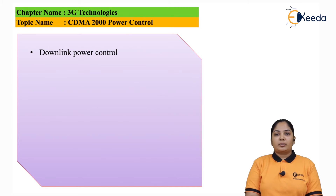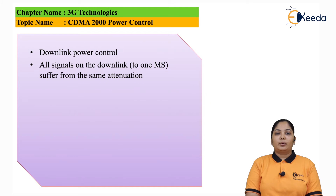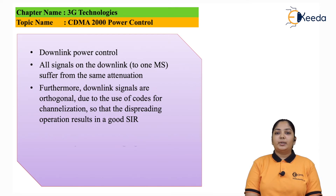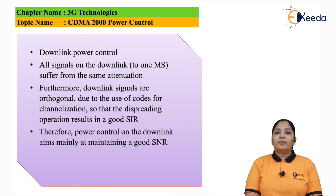Let us see the downlink power control system. In downlink power control, all the signals on the downlink towards the mobile station suffer the same attenuation. Further, the downlink signals are orthogonal due to the use of codes for channelization, that is the PN code sequences, so that the de-spreading operation results in a good signal to interference ratio. Therefore, the power control on the downlink is aimed mainly at maintaining a good signal to noise interference ratio.